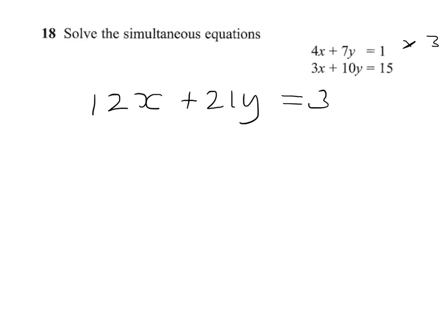I'll now multiply the bottom equation by 4. If I do that, the x's become the same. It should be clear why I'm doing that. And then it's 4 lots of 10y, which is 40y, and 4 lots of 15, which is 60.